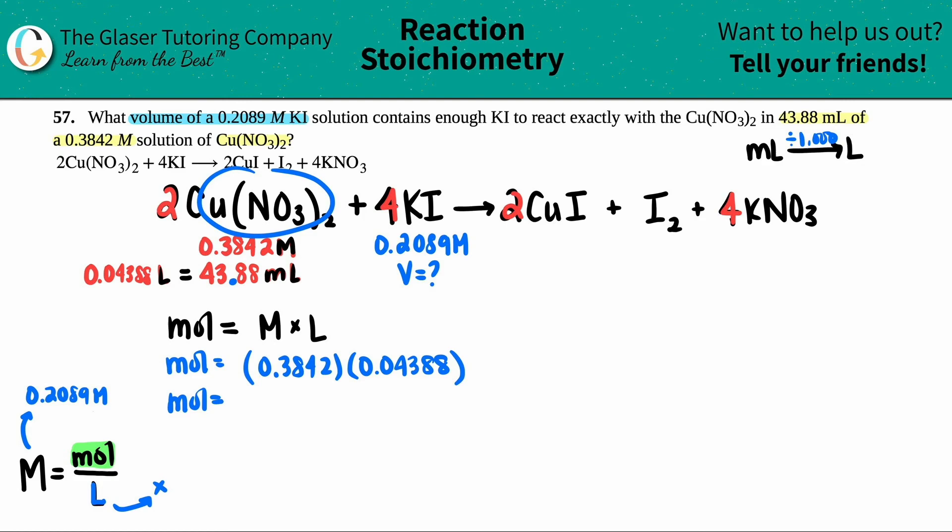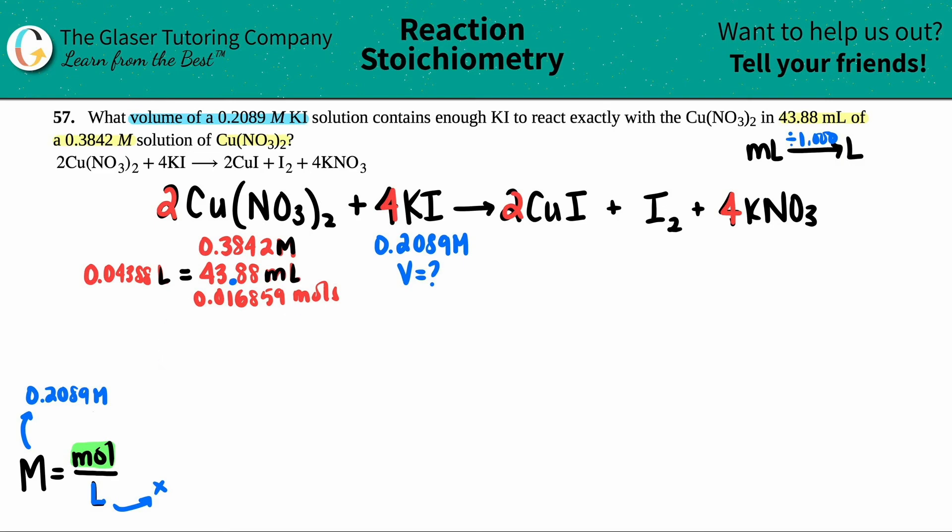Now we have molarity and liters. Let's do this formula to solve for the moles. If I rearrange this formula, I know that moles equals molarity times liter. Moles equal 0.3842 times 0.04388. Let's see how many moles I have of the copper two nitrate: 0.016859 moles.